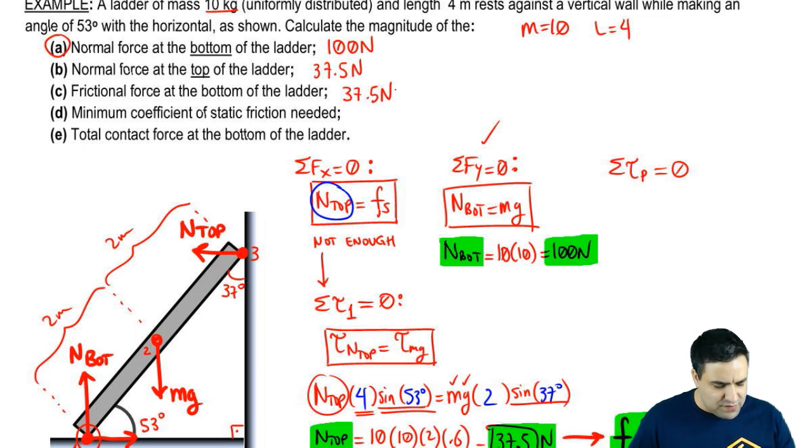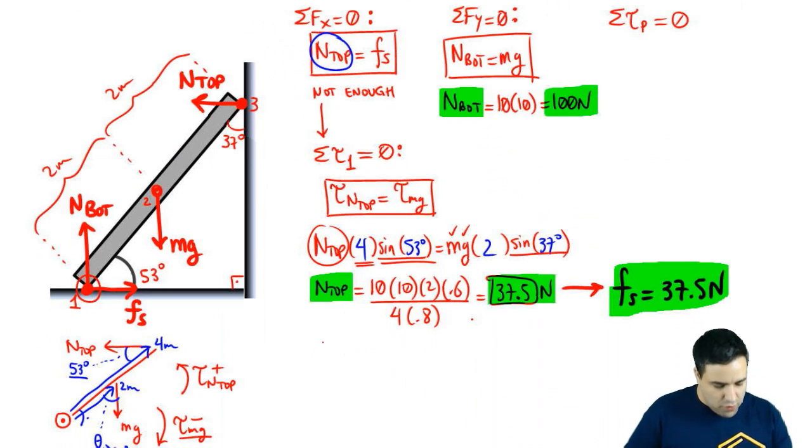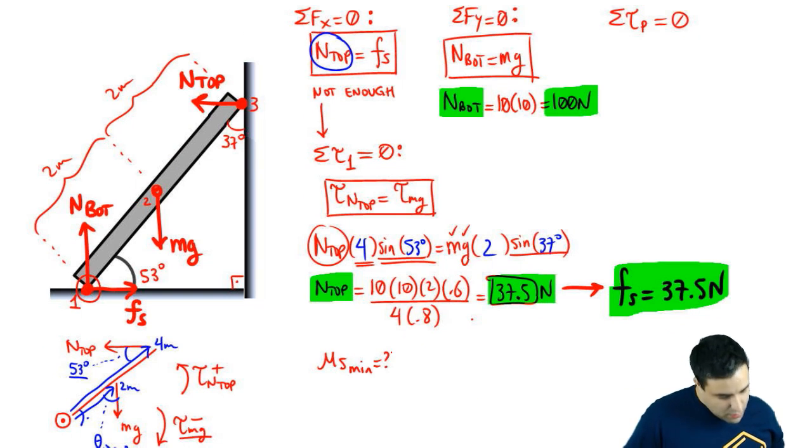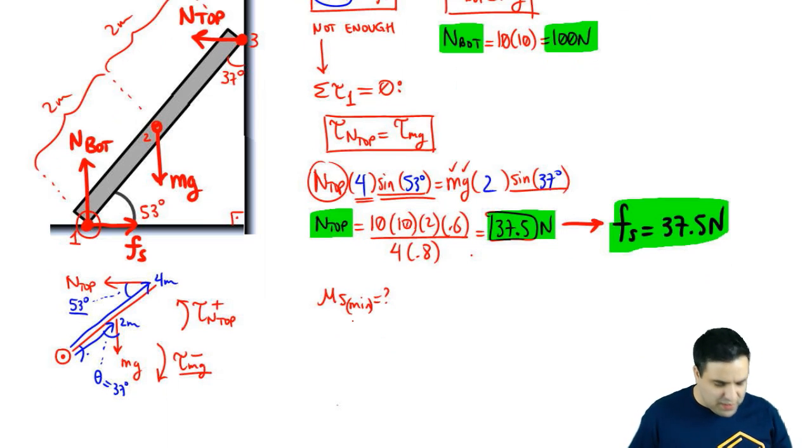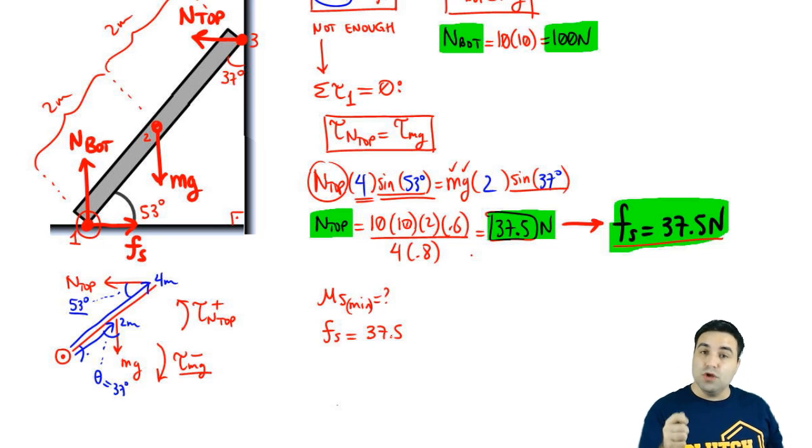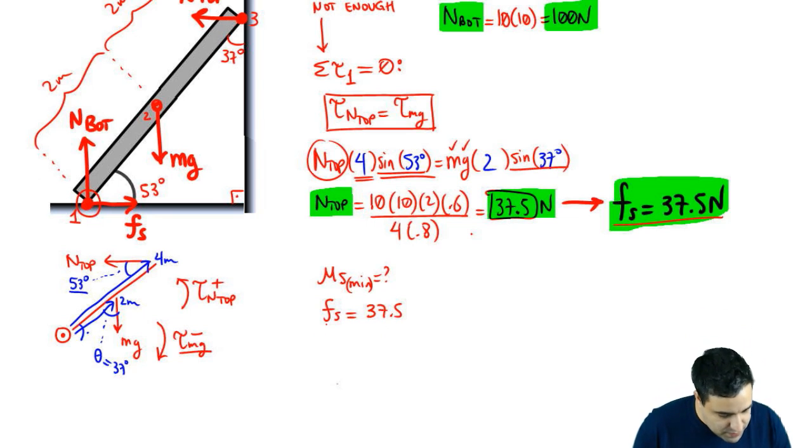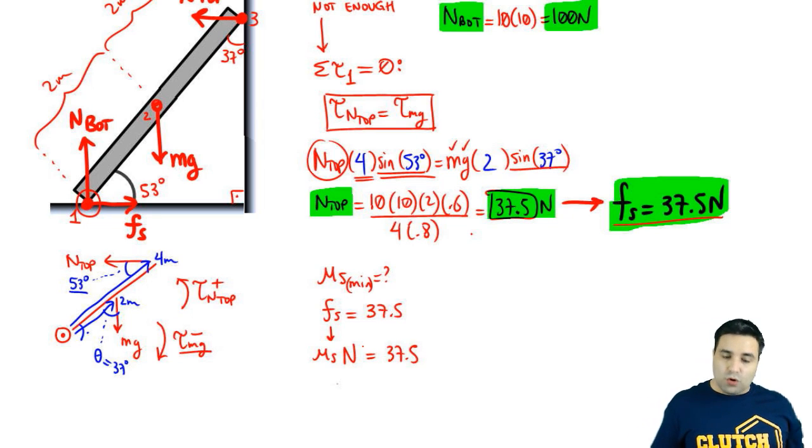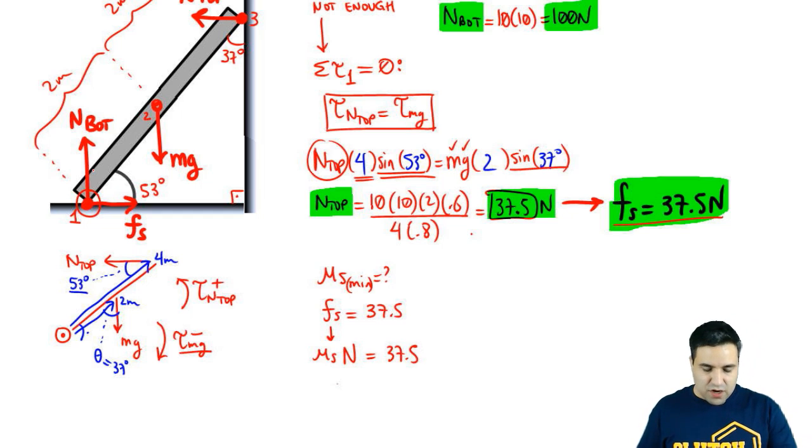Now I want to know the minimum coefficient of static friction needed. So I'm looking for mu static min. Just ignore the min. All you're really looking for is mu static. Plugging it into here. So we're going to say friction static is 37.5. You know that the equation for friction static is mu static normal. So this gets replaced with mu static normal equals 37.5. Now do I use normal bottom or normal top? What do you think? Friction is over here. So you use normal bottom.